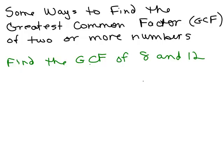Let's say I said find the greatest common factor of 8 and 12. So basically, I need to find factors of 12. Then I have to figure out which ones they have in common, and then I have to find the greatest one. These are the greatest in common — that describes what kind of factors.